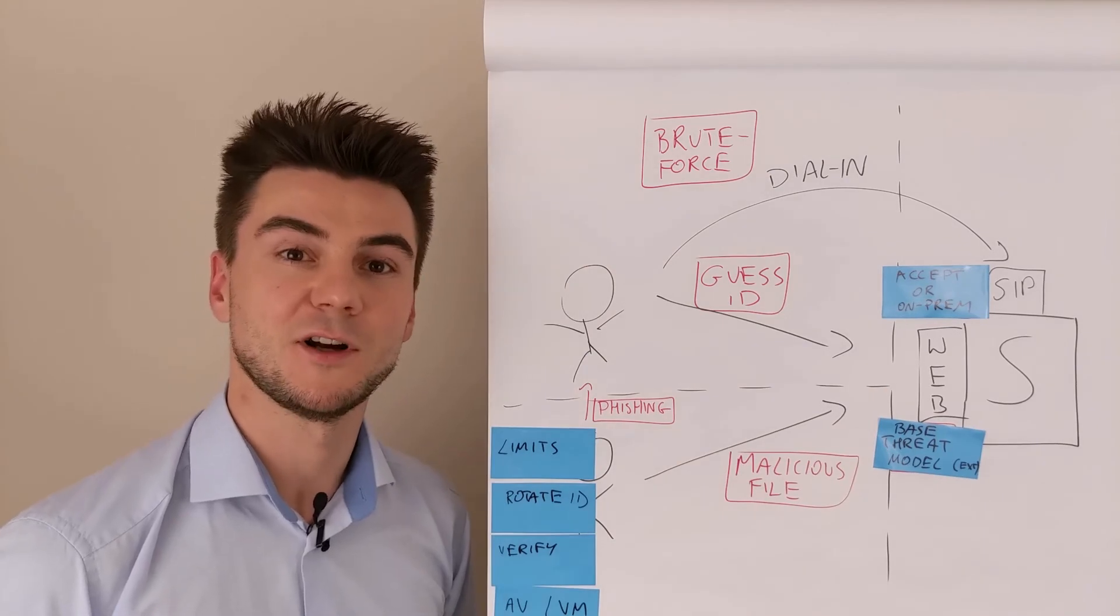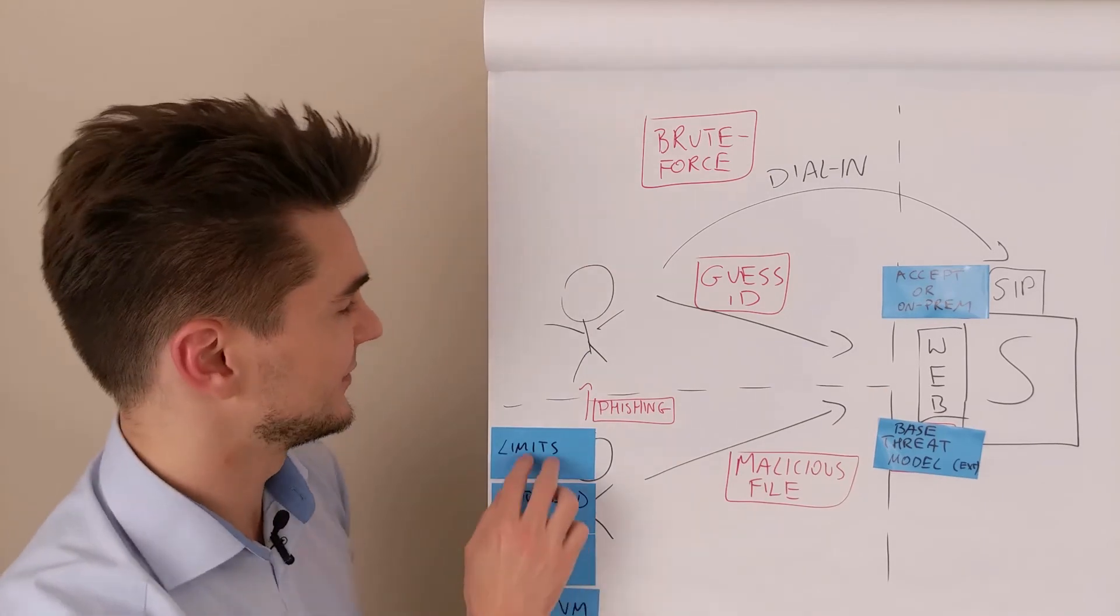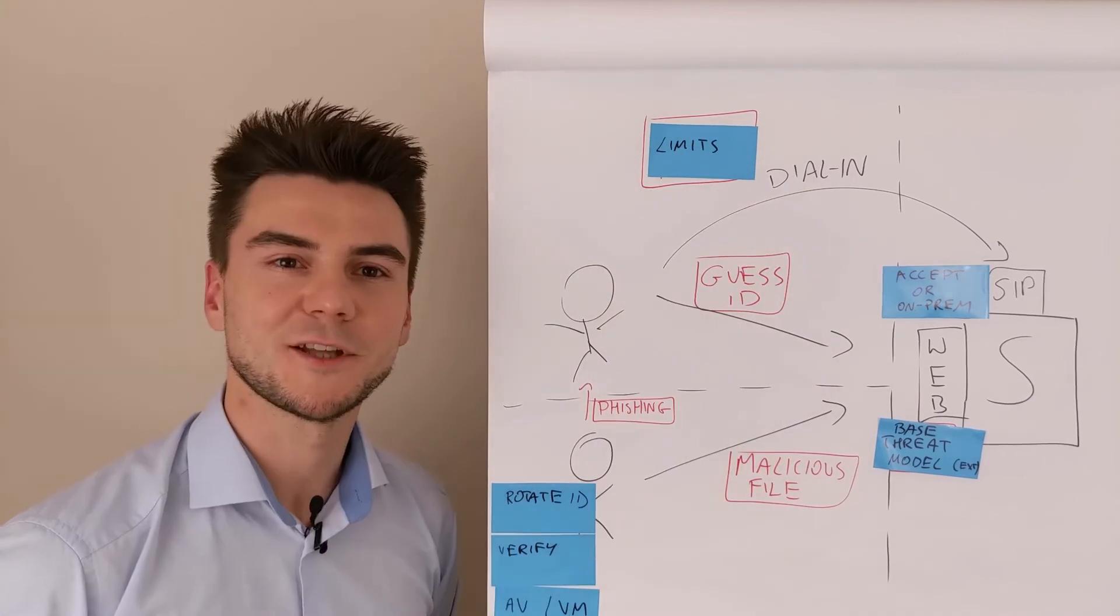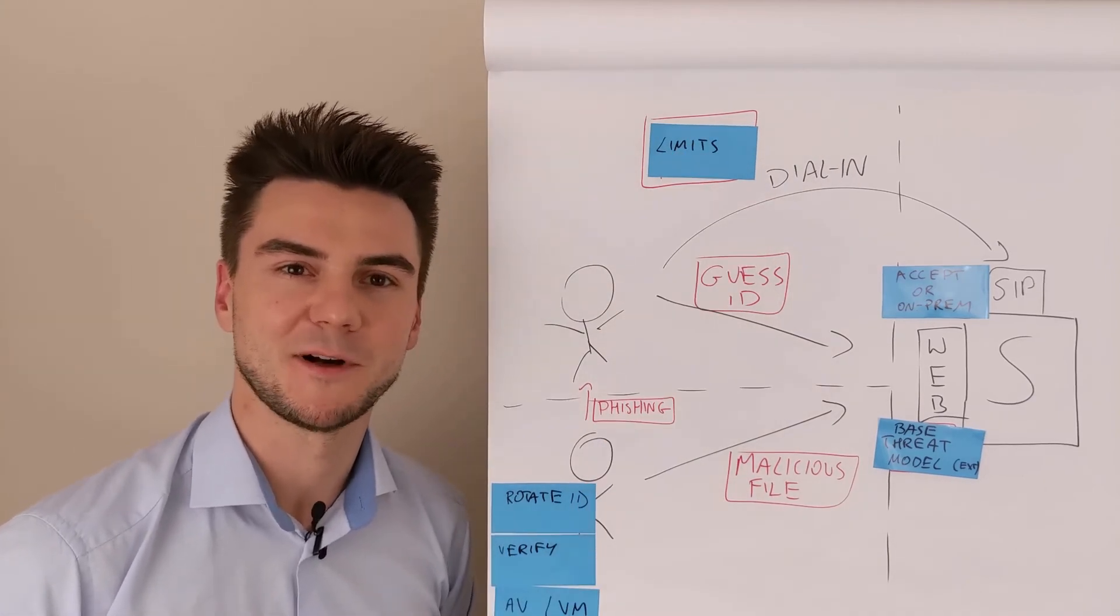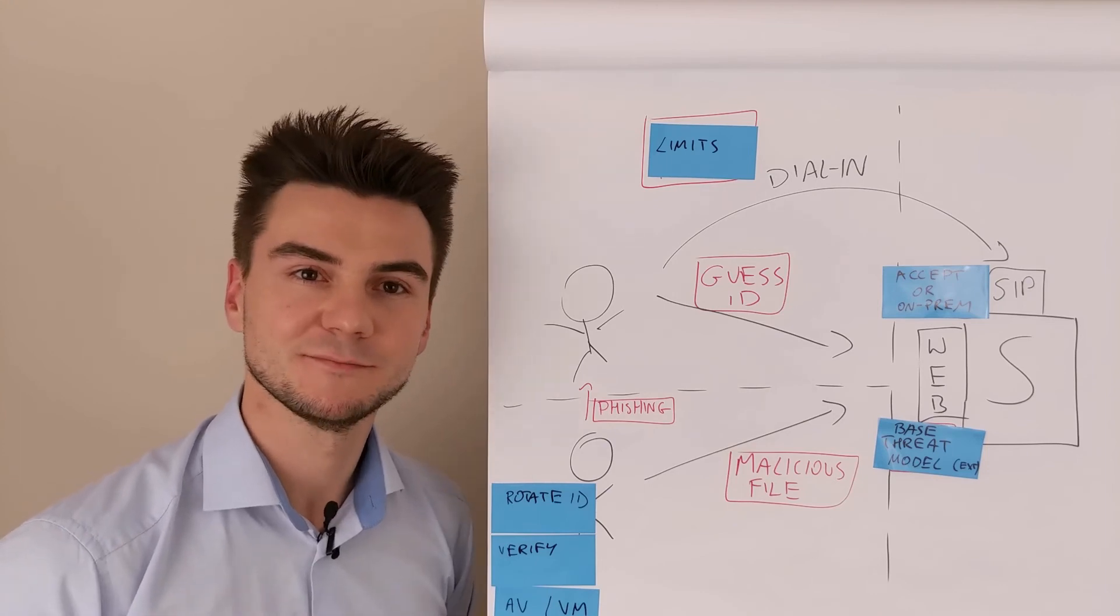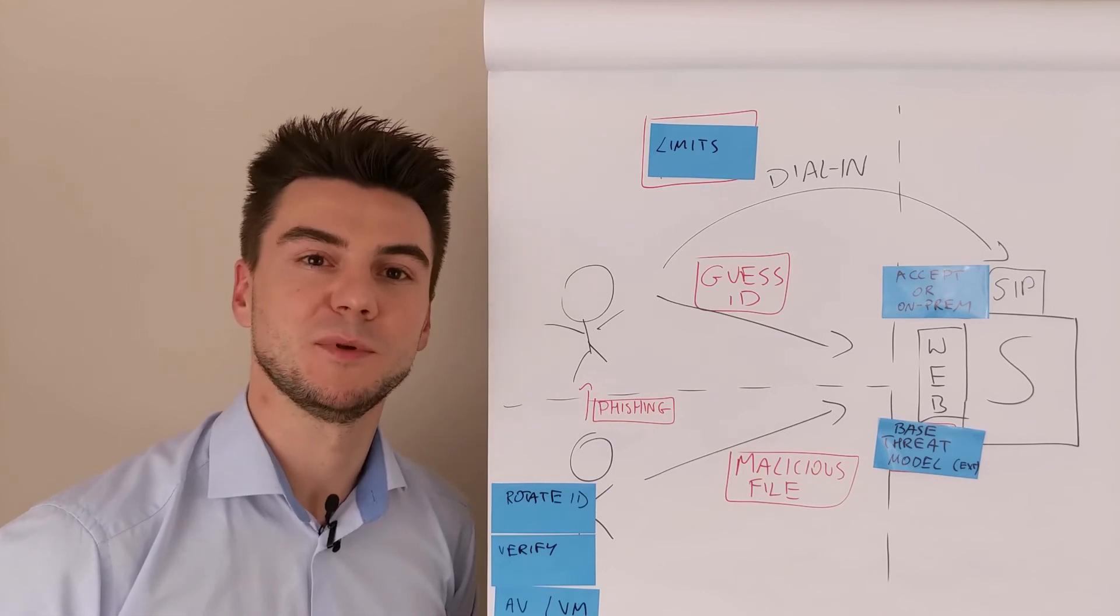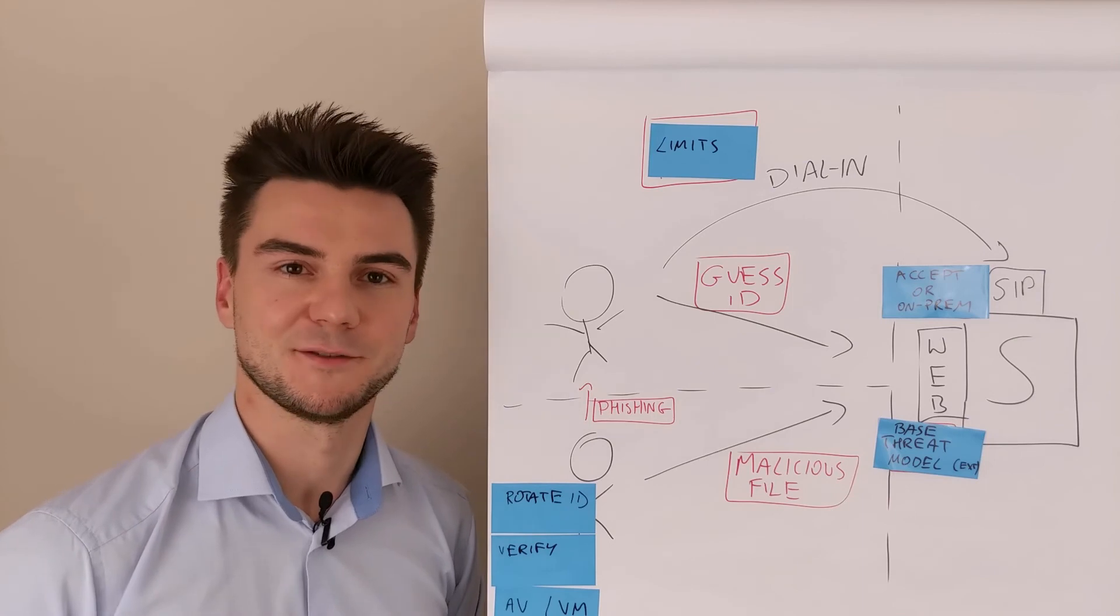Any system exposed to the internet, introduce limits based on IP addresses or phone numbers. Don't use personal rooms. Always rotate the meeting IDs and passwords. If you don't, at least confirm that all of the people that joined the call are authorized to do so.